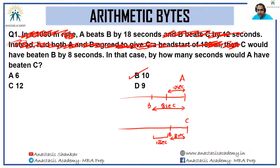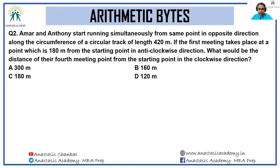Next question: Amaran and Anthony start running simultaneously from the same point in opposite directions along the circumference of a circular track of length 420 meters. If the first meeting takes place at a point which is 180 meters from the starting point in the anti-clockwise direction, what would be the distance of their fourth meeting point from the starting point in the clockwise direction?